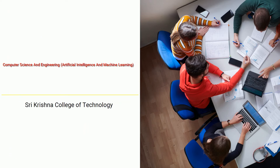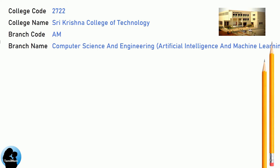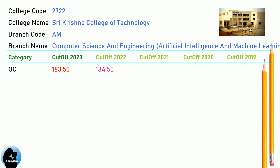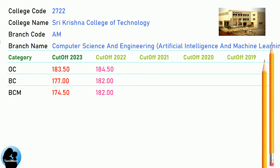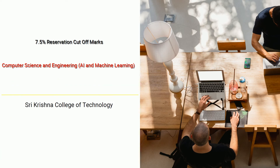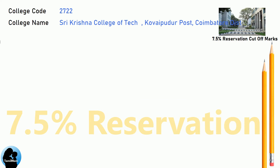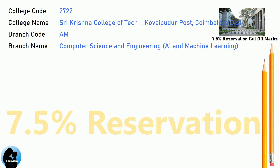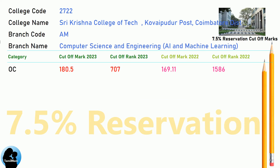DNA Cut-off for Shri Krishna College of Technology in Computer Science and Engineering, Artificial Intelligence and Machine Learning. DNA 7.5 Reservation Cut-off for Shri Krishna College of Technology in Computer Science and Engineering, AI and Machine Learning.